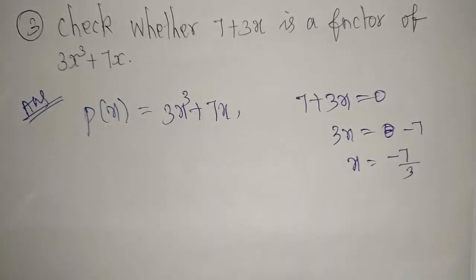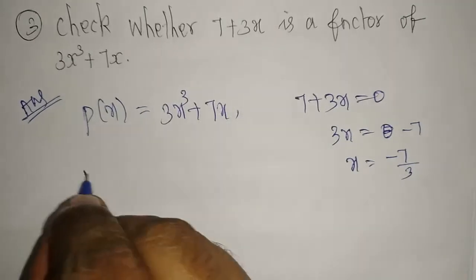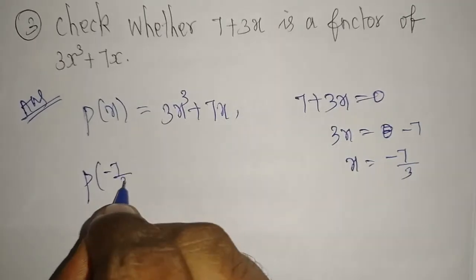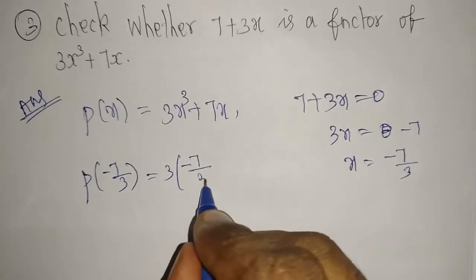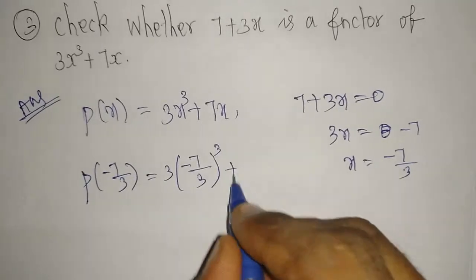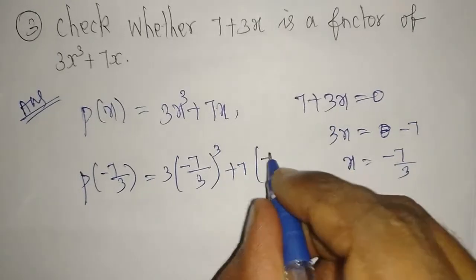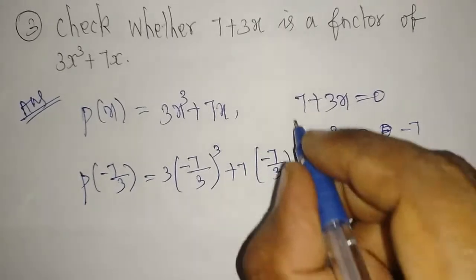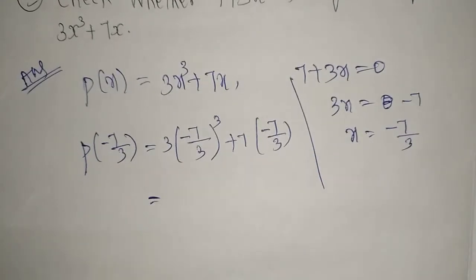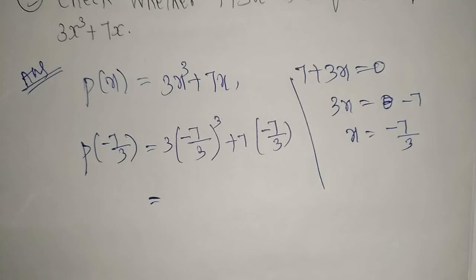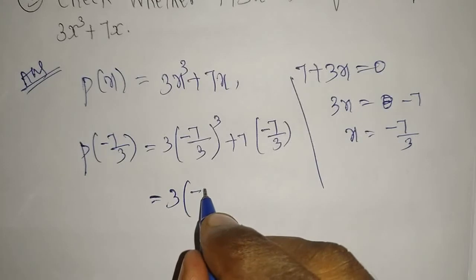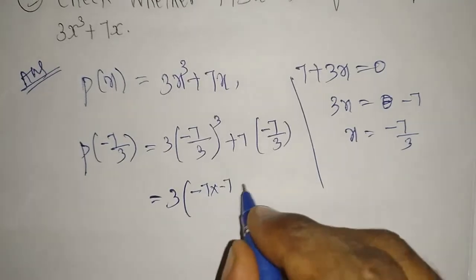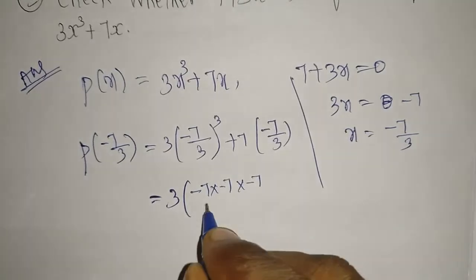Now let's substitute this x value in the given polynomial. Then p of minus 7 divided by 3, which is equal to 3 times (minus 7 divided by 3) whole power 3, plus 7 times x, x value minus 7 divided by 3. The cube is common for both numerator and denominator. So 3 times minus 7 whole power 3, now minus 7 times minus 7 times minus 7, whole divided by 3 power 3, now 3 times 3 times 3.